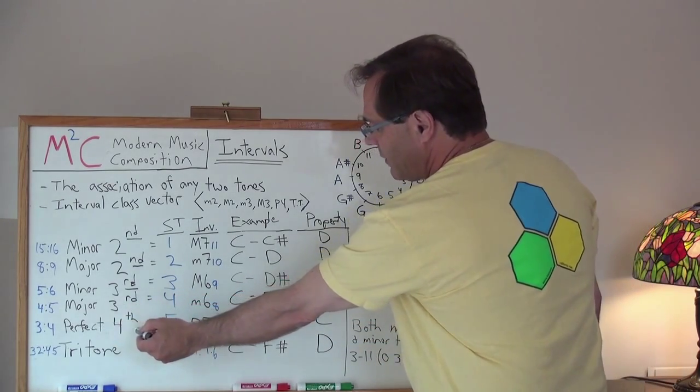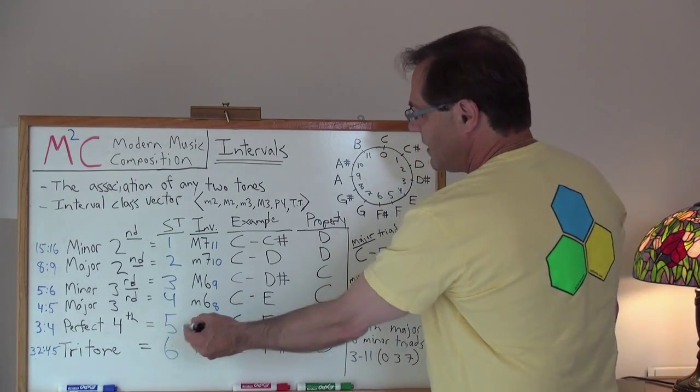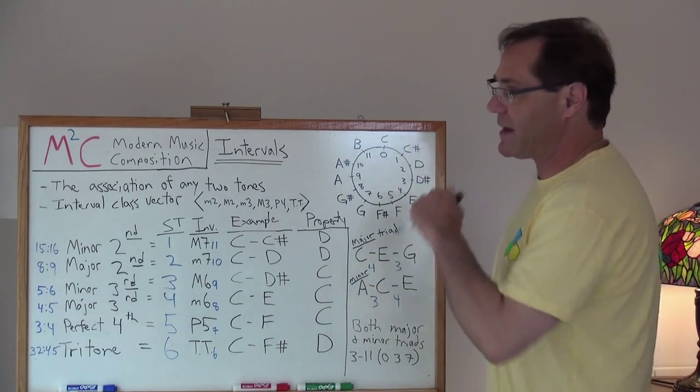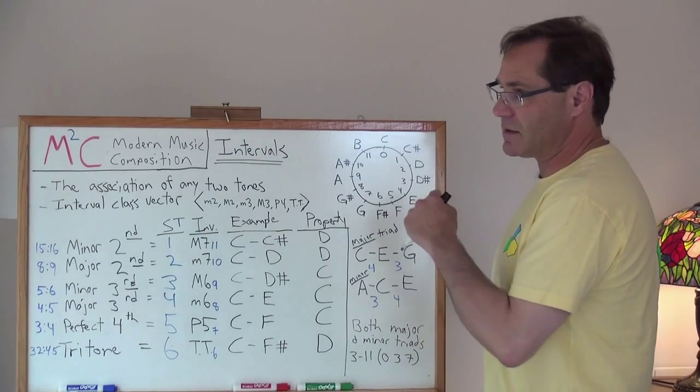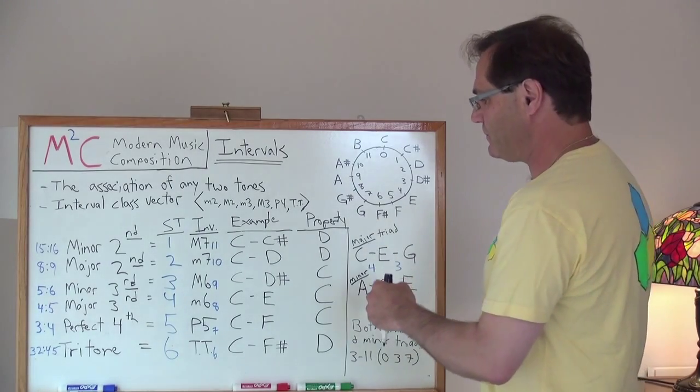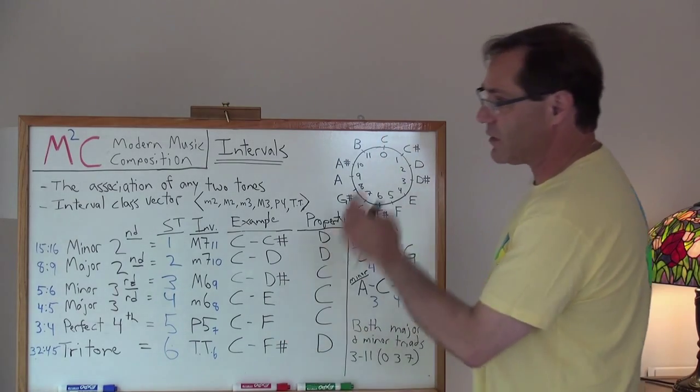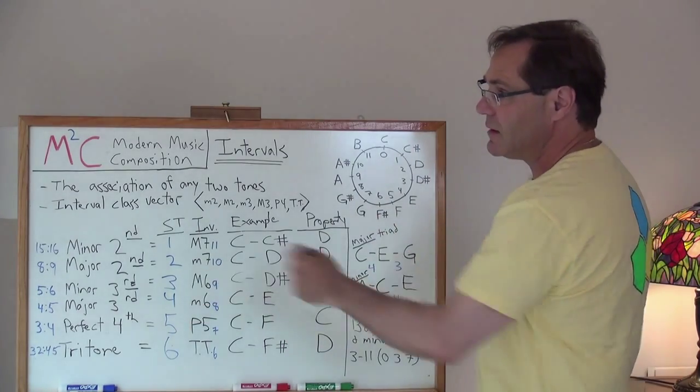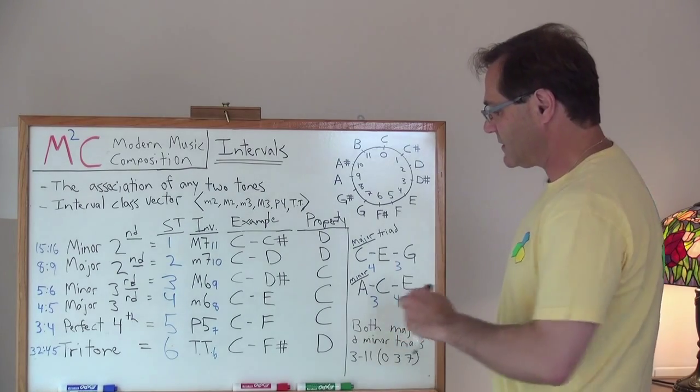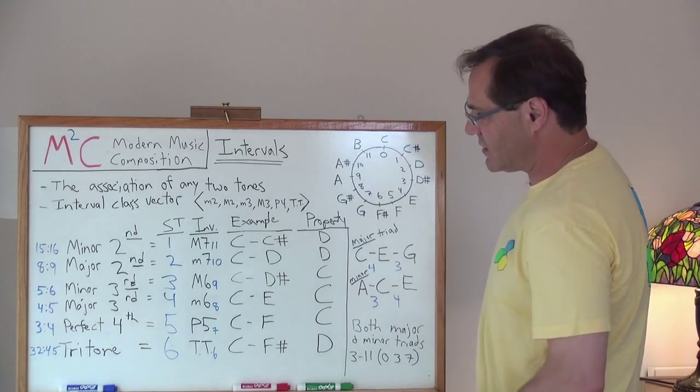Next is a perfect fourth. That has five semitones. And that's actually like going counterclockwise on the circle of fifths. What's our example here? That would be C to F. We're going counterclockwise C to F on the circle of fifths. That is also consonant.